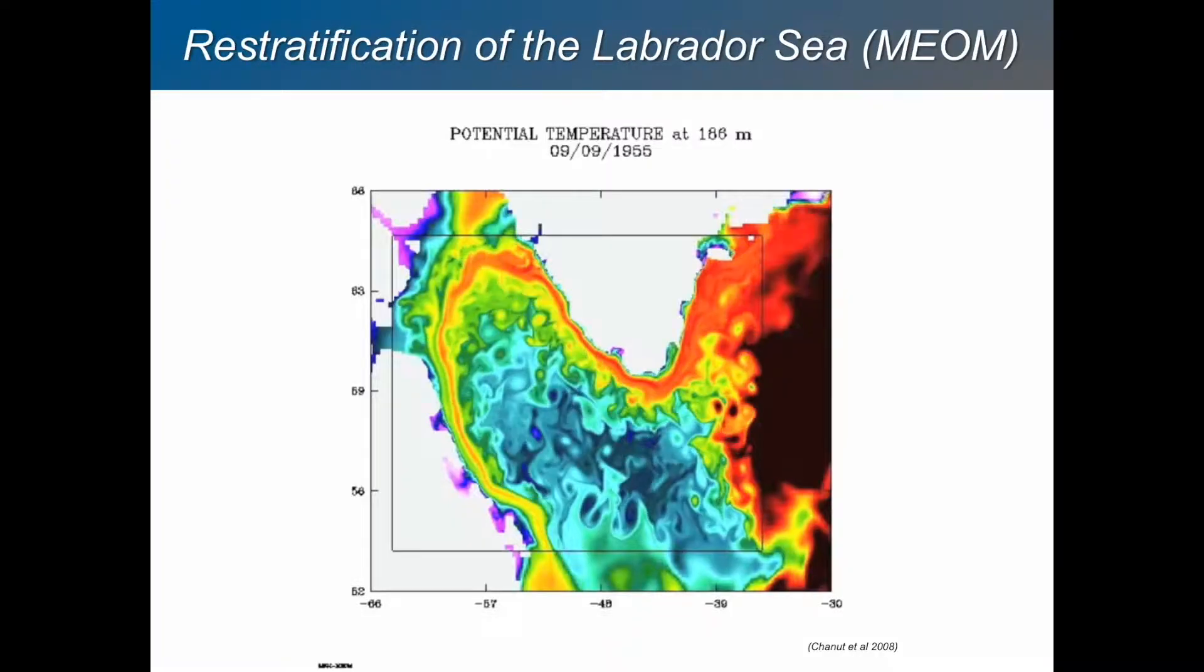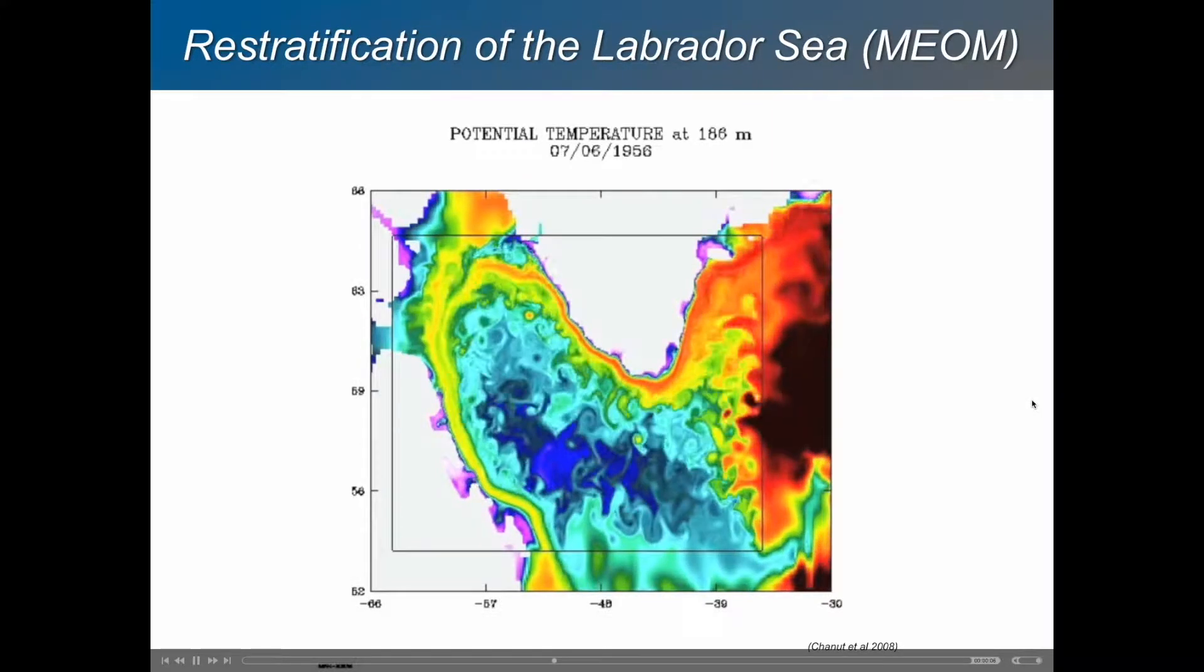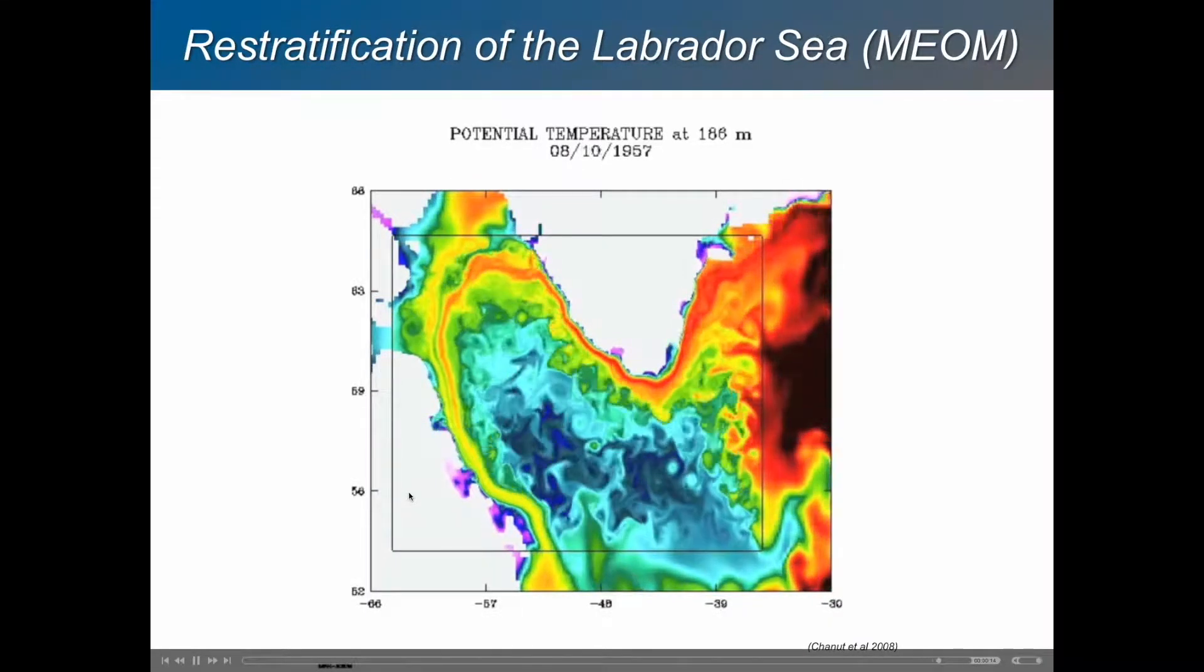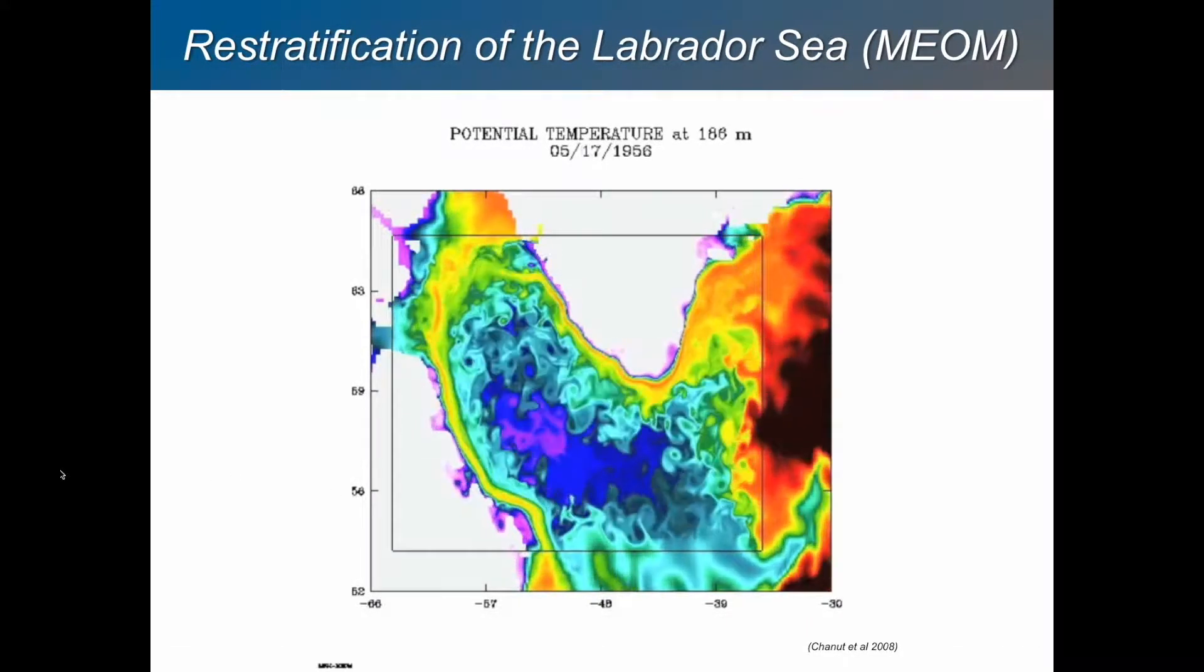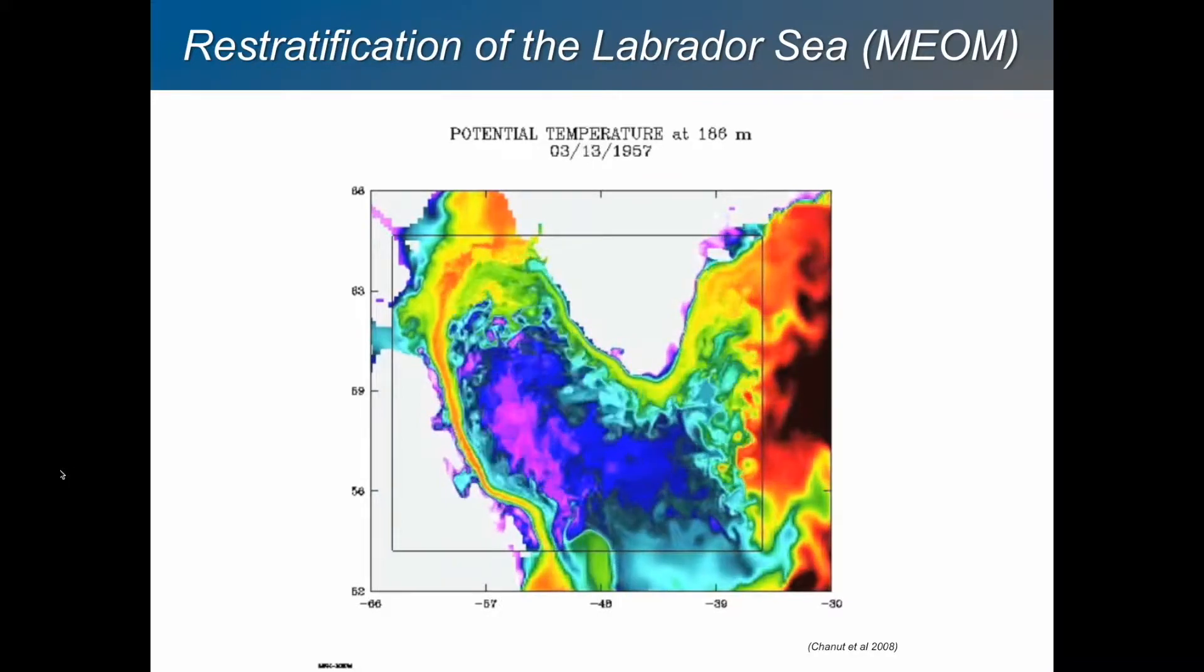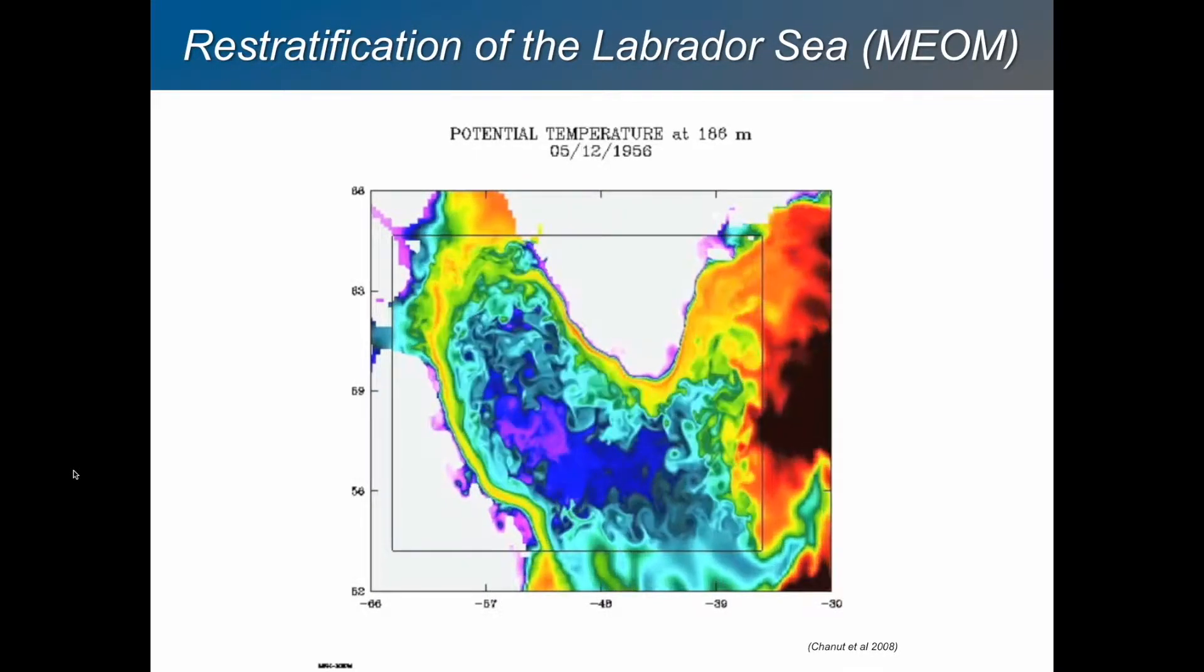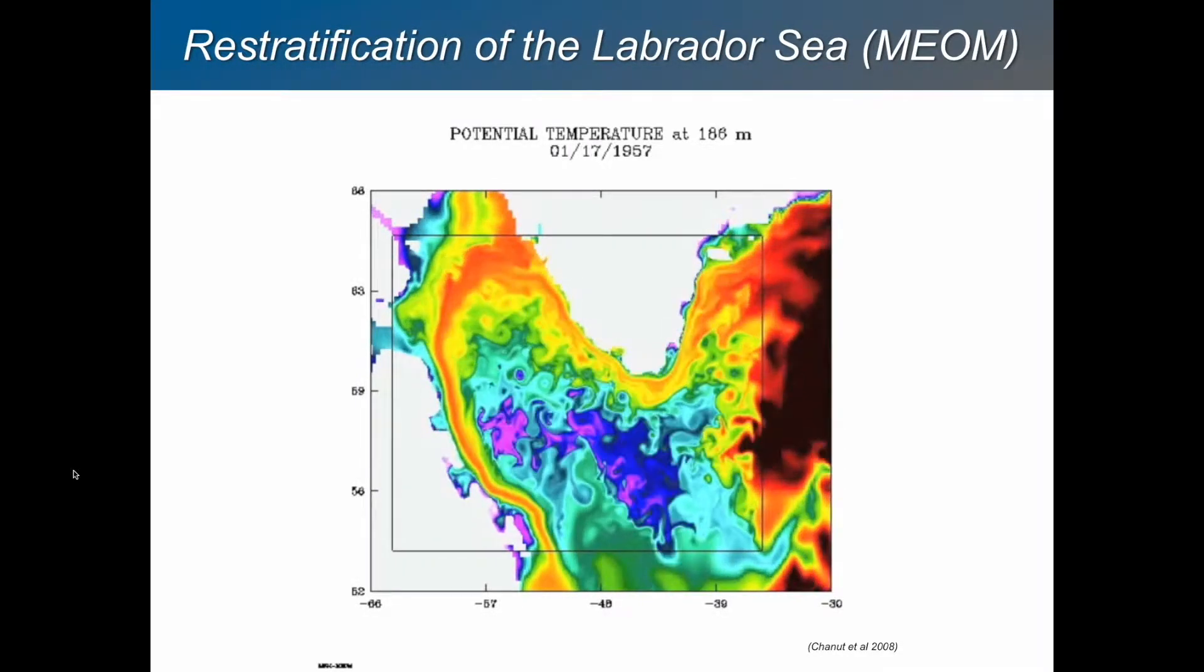Here's another example. This is in the ocean. So this is a model simulation of flow in the Labrador Sea. Here's Greenland. Here's Labrador, Canada. And this shows a very strong annual cycle. You see the arrival of the winter. You'll see the cold winds coming off Labrador will cause this sudden cooling in the surface. And that cooling, which you see in blue, is mixed in the vertical very rapidly because it's convectively unstable. And so that cools the whole column right down to the bottom of the ocean.